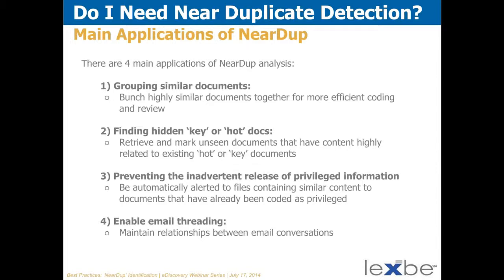The third main application is preventing inadvertent release of privileged information. When you're doing your privilege review and work product review, you'll find documents and mark them, but there's a danger of not finding all of them. Near-dupe technology allows you to look at documents you've marked as privileged or work product and also look at ones you have not marked that are near-dupes — identifying those as candidates for also being marked as privileged. It's a great technology for preventing inadvertent release. The last application, already discussed, is maintaining email threading in a more intelligent fashion.